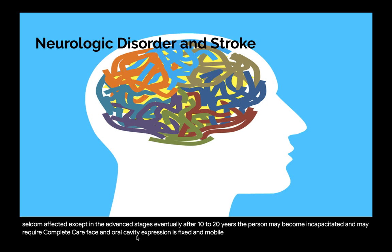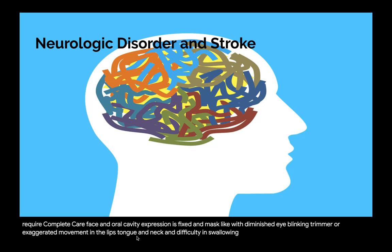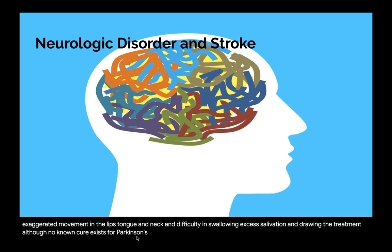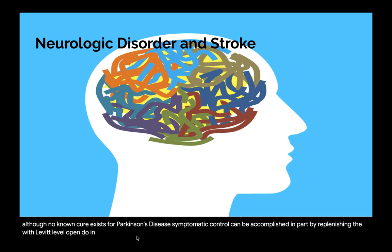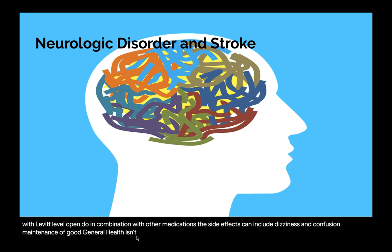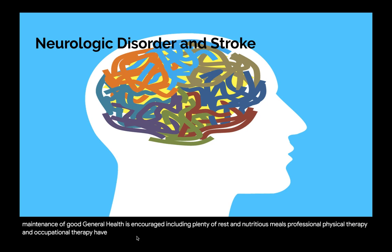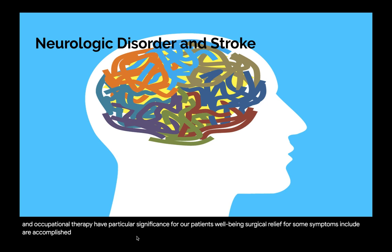Facial expression is fixed and mask-like with diminished eye blinking. Tremor or exaggerated movement in the lips, tongue, and neck, and difficulty in swallowing and excess salivation and drooling are common. Although no known cure exists, symptomatic control can be accomplished in part by replenishing dopamine stores with levodopa in combination with other medications. Maintenance of good general health, physical therapy, and occupational therapy are important. Surgical relief for some symptoms can be accomplished by deep brain stimulation or pallidotomy.